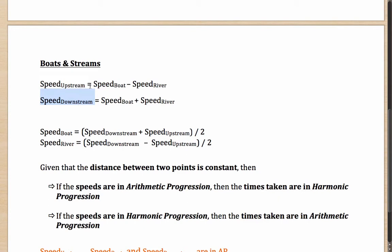The speed upstream is essentially given by speed of the boat minus the speed of the river. Not only the formula is important, it is also important to understand how we get this formula. Well, speed of the boat is the speed at which the boat would move if there was no resistance, no water flow.